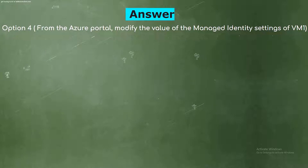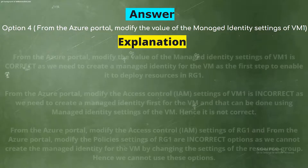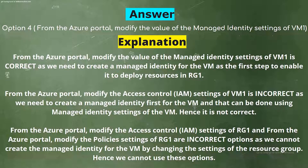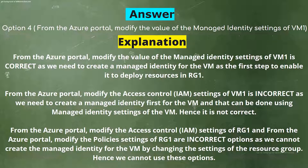The correct answer is Option 4: from the Azure portal, modify the managed identity settings of VM1. Explanation: We need to create a managed identity for the VM as the first step to enable it to deploy resources in RG1. Modifying the access control settings of VM1 is incorrect, as we need to create a managed identity first using the managed identity settings of the VM. Modifying the access control settings of RG1 and the policy settings of RG1 are incorrect, as we cannot create the managed identity for the VM by changing the settings of the resource group.